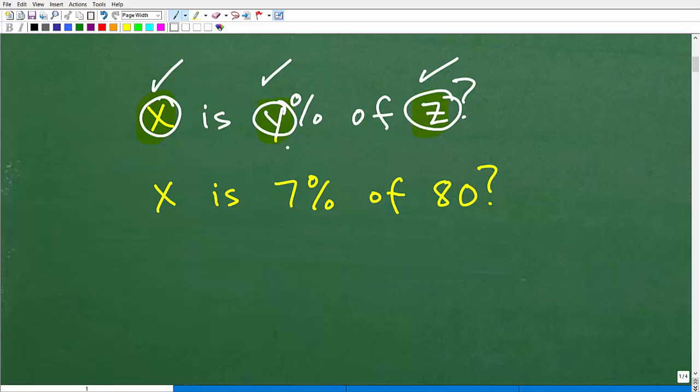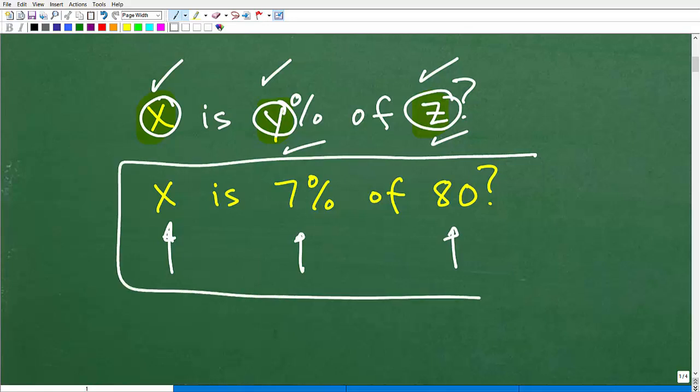So let's go ahead and replace Y and Z with actual numbers. So that would look something like this. X is, and then I'm going to put 7 for Y. Okay, so X is 7% of, and then for Z, we'll put 80. Okay, so X is 7% of 80. So now here, ask yourself, all right, do I know how to do this problem? Okay, well, this should be a pretty easy problem for you to do.